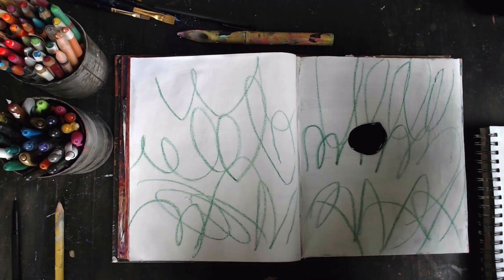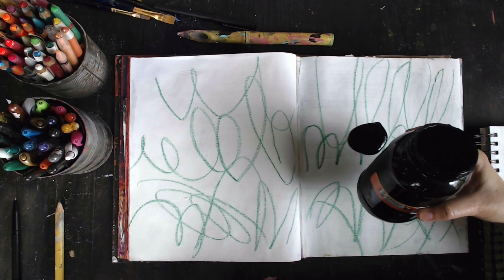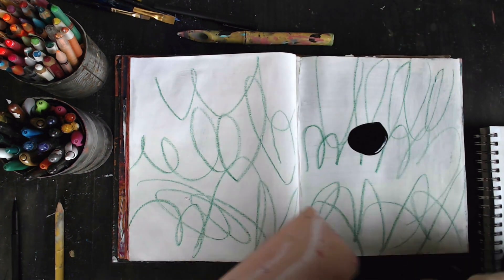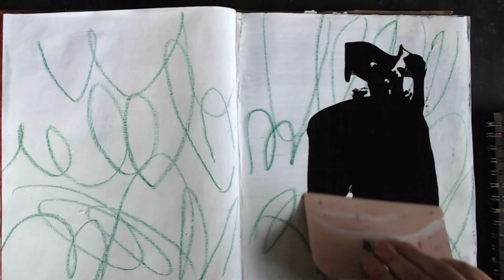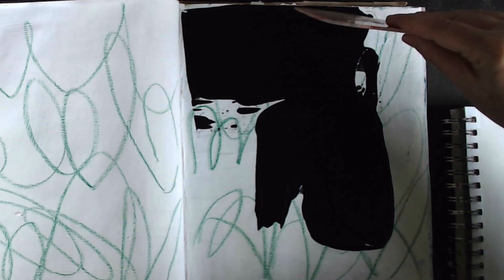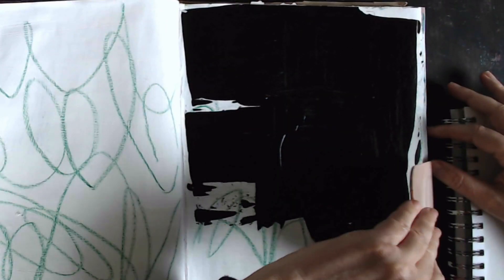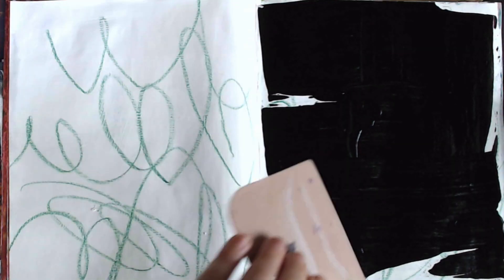I just poured some acrylic paint here onto the page. It's very liquidy. And now I'm going to spread this paint around. You can use a gift card. This is one of those tools they use for car repair like to put on bondo or something. I think that's what it's called.